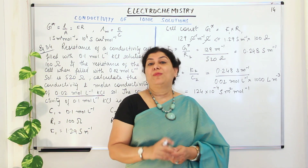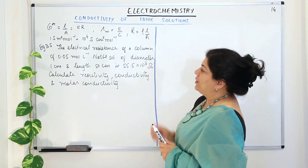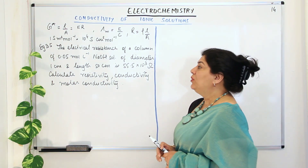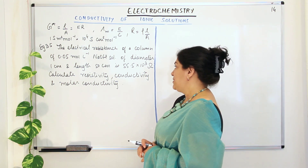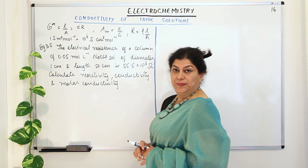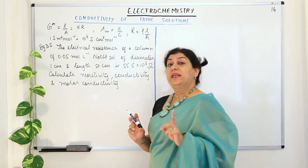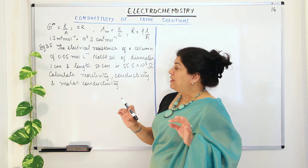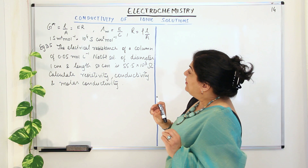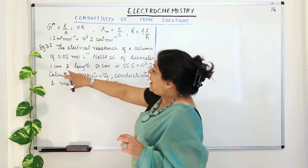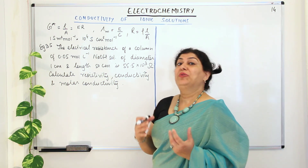That was the first problem. Now I will do one more problem. This is example 3.5. The electrical resistance of a column of 0.05 mol per liter sodium hydroxide solution of diameter 1 centimeter and length 50 centimeters is 55.5 × 10³ ohms. The dimensions of the conductivity cell are given, from which you calculate the area using the diameter.